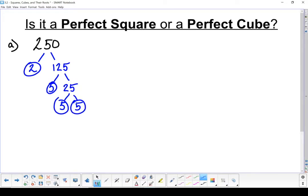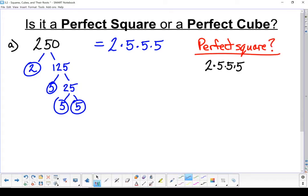We've got our prime factorization. Let's write it as a product of its prime factors. So let's start first. Is it a perfect square? If it's a perfect square, we're going to break it up into groups of two. How many pairs of numbers do I have? Remember, those pairs have to be the same.